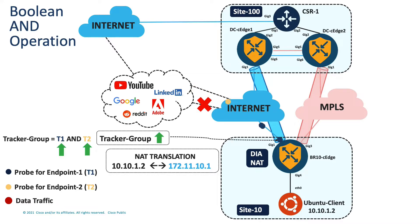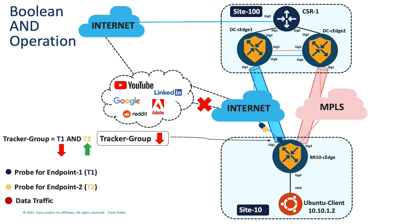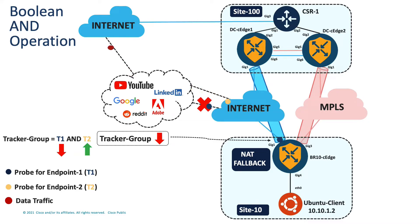Now due to some disruption in the ISP network, there is no reply received for the blue probes which are mapped to tracker T1. Due to this, the status of tracker T1 goes down, resulting in the tracker group going down as well — because for an AND operation, even if one tracker is down, the tracker group will remain down. The tracker status for T2 remains up as the router is still receiving replies for the yellow probes. The data traffic then gets routed through the SD-WAN overlay tunnel through the data center site 100, provided that NAT fallback is configured on the BR10CH router.